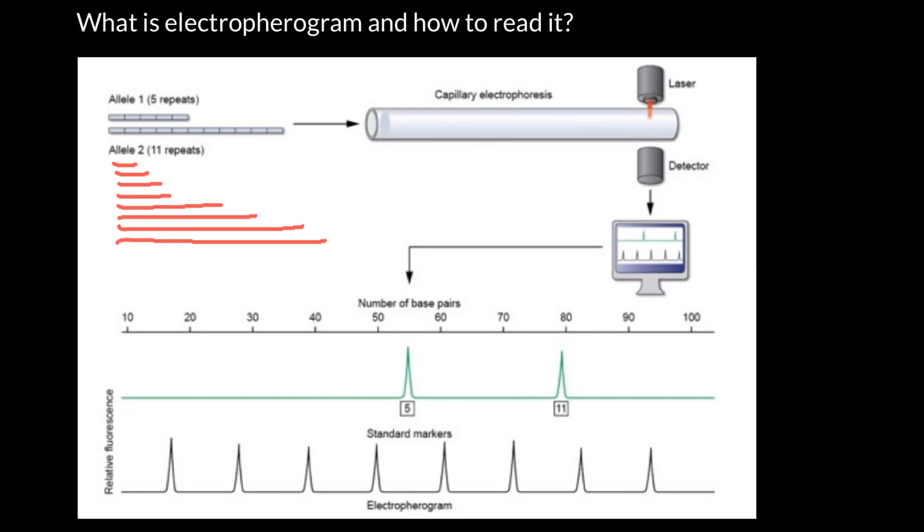So we instantly know that one of the molecules has to be somewhere between 50 and 60 nucleotides, and another one between 70 and 80 nucleotides.